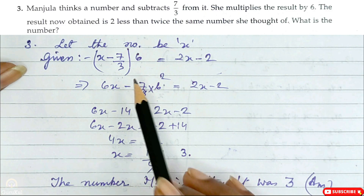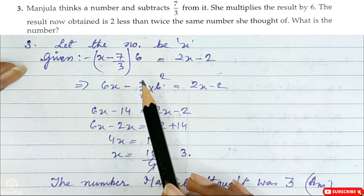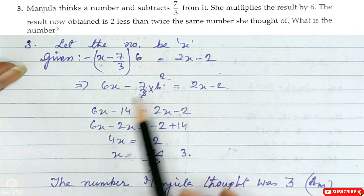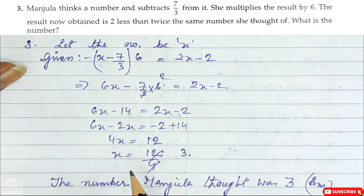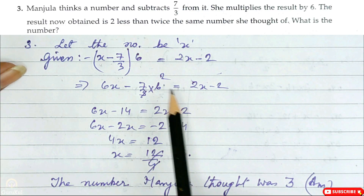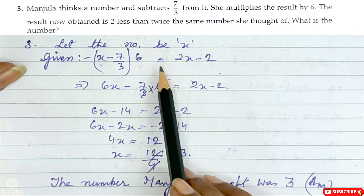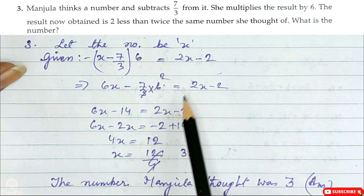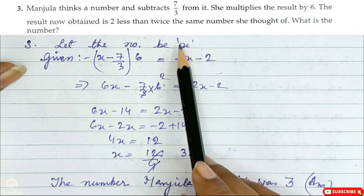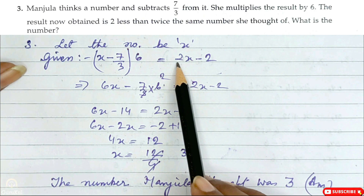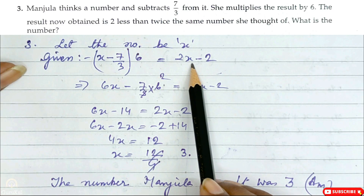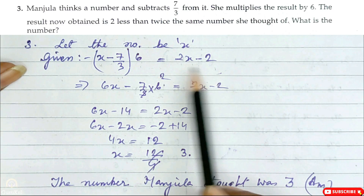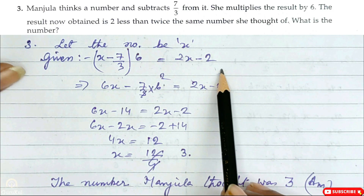The result now obtained is 2 less than twice the same number she thought of. So the result equals twice the number: that is 2x, and minus 2. This is the equation.